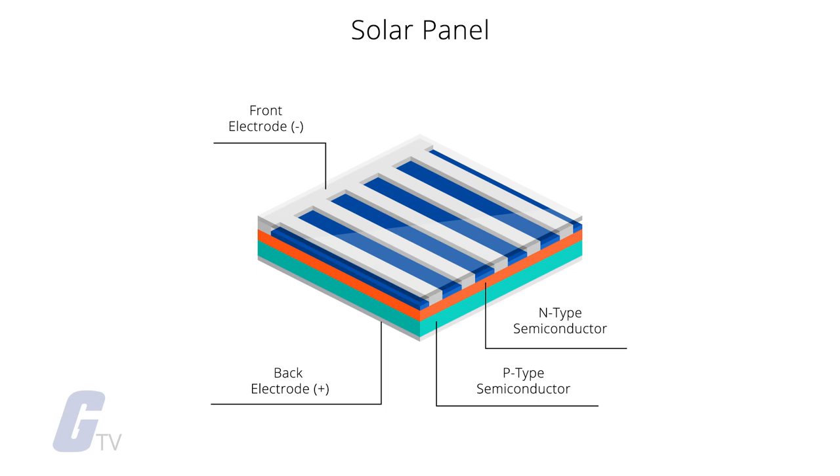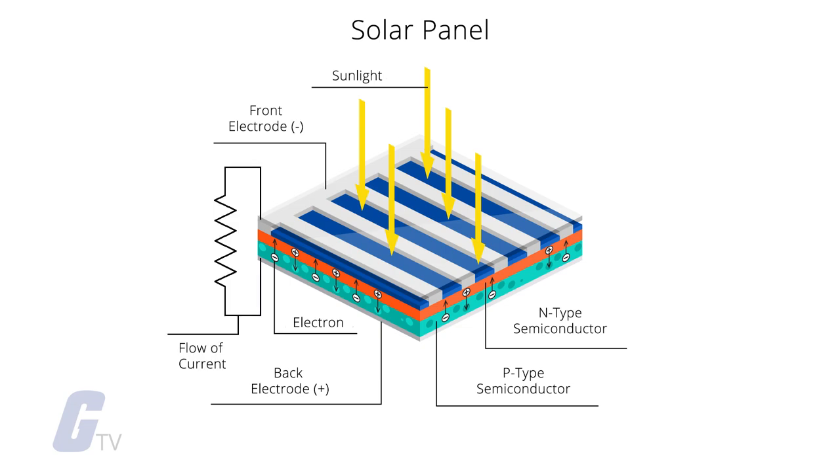When photons from the sun hit a solar cell, electrons are knocked loose from their atoms. If conductors are attached to the positive and negative sides of a cell, it forms an electrical current.